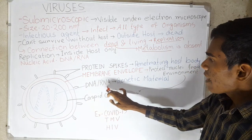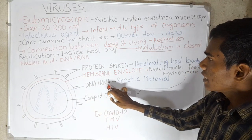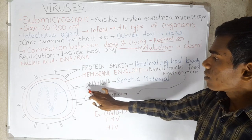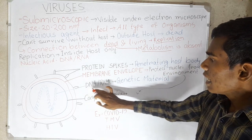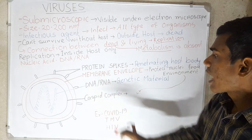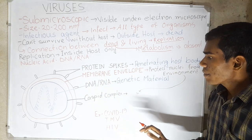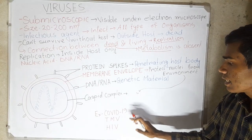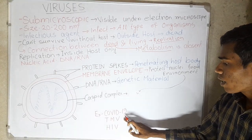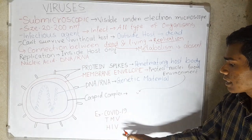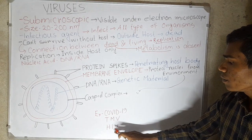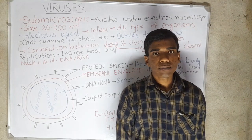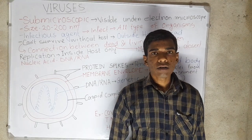They have genetic material or nucleic acid such as DNA or RNA. Some examples of viruses are COVID-19, Tobacco Mosaic Virus, Human Immunodeficiency Virus, etc. Thanks for watching this video.